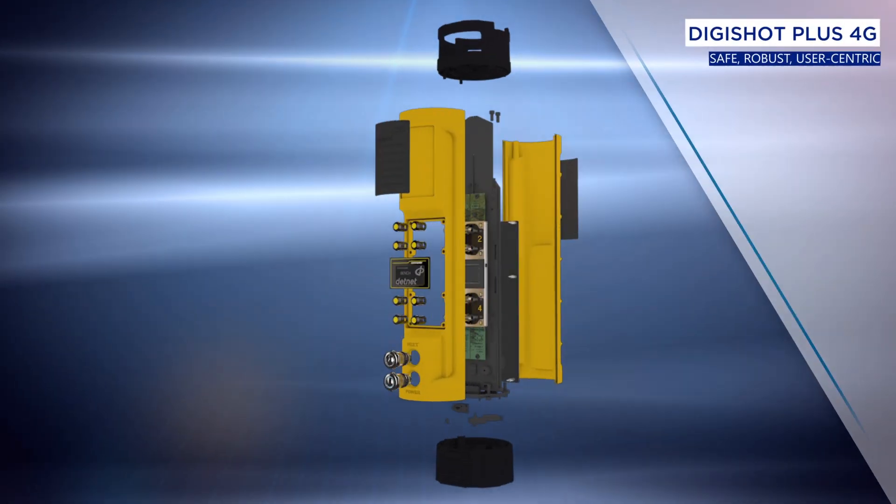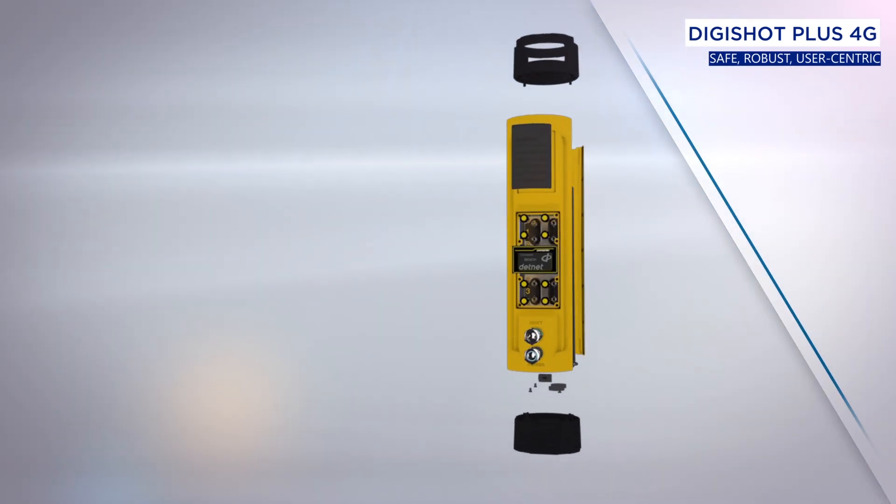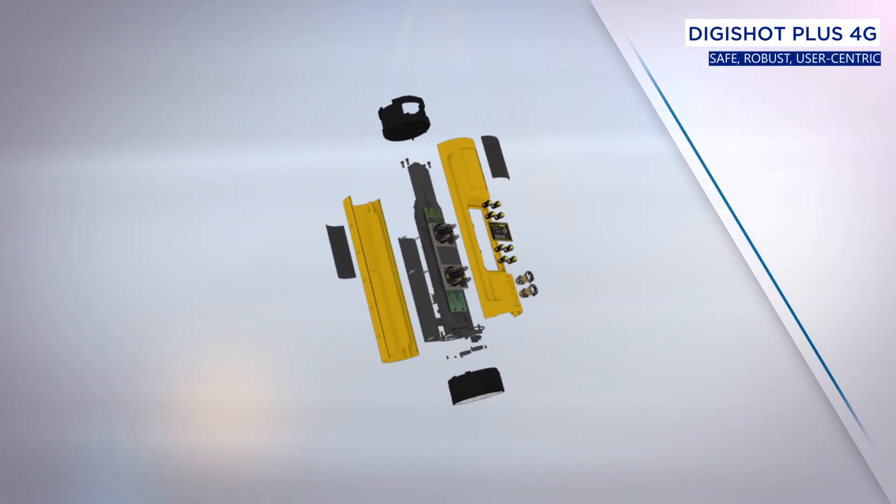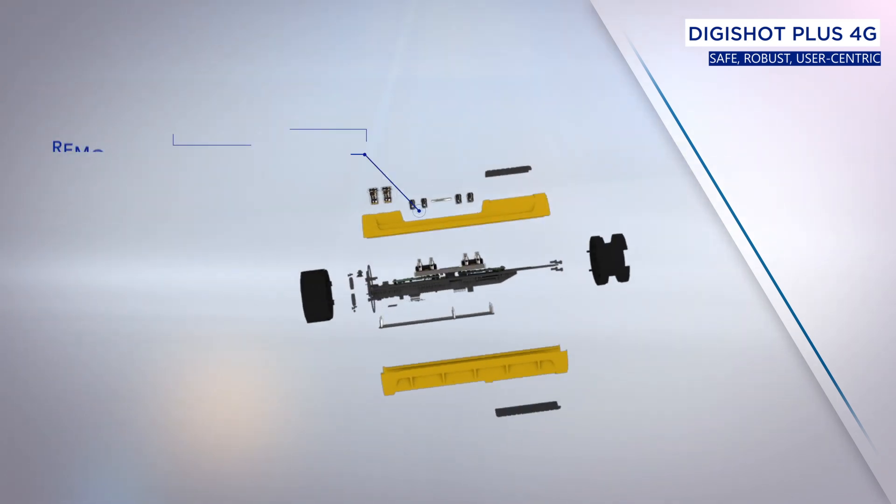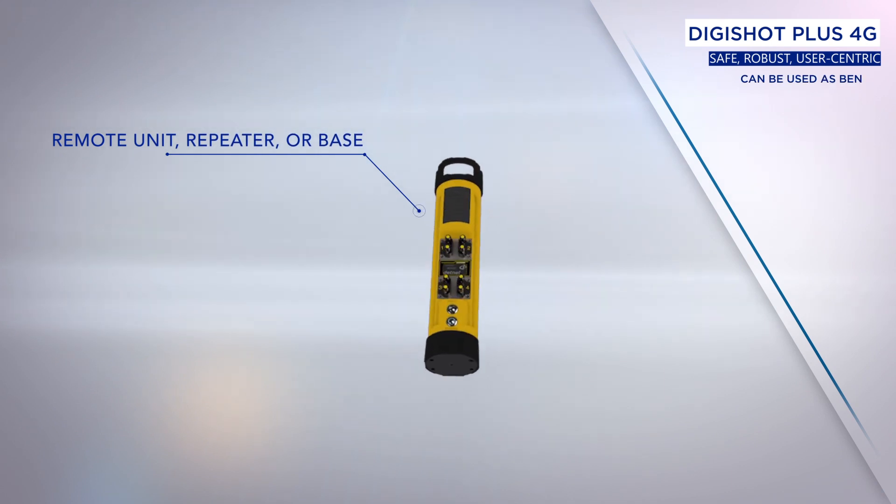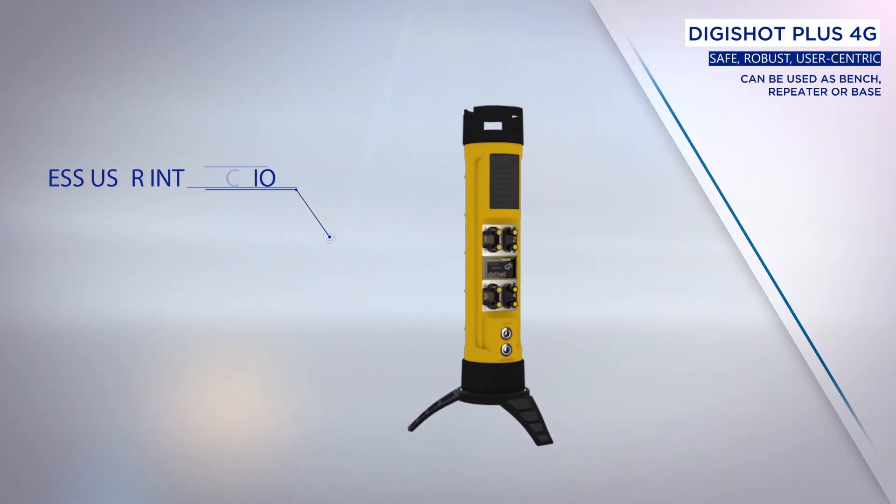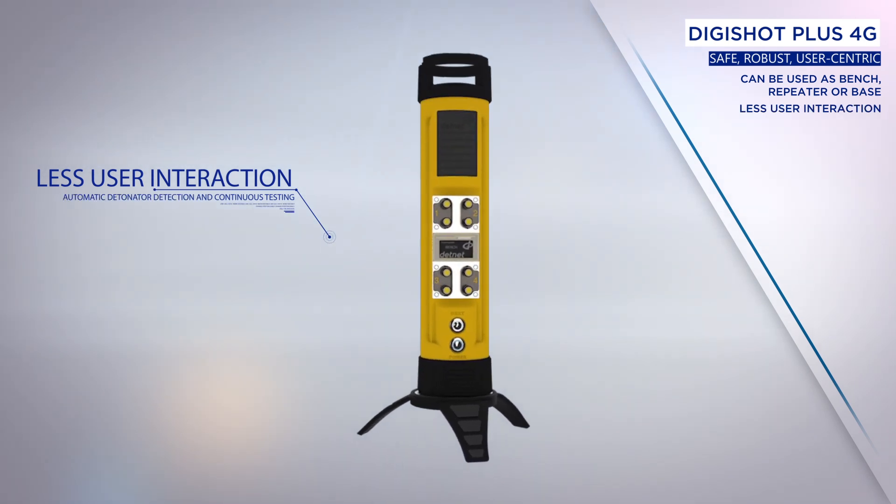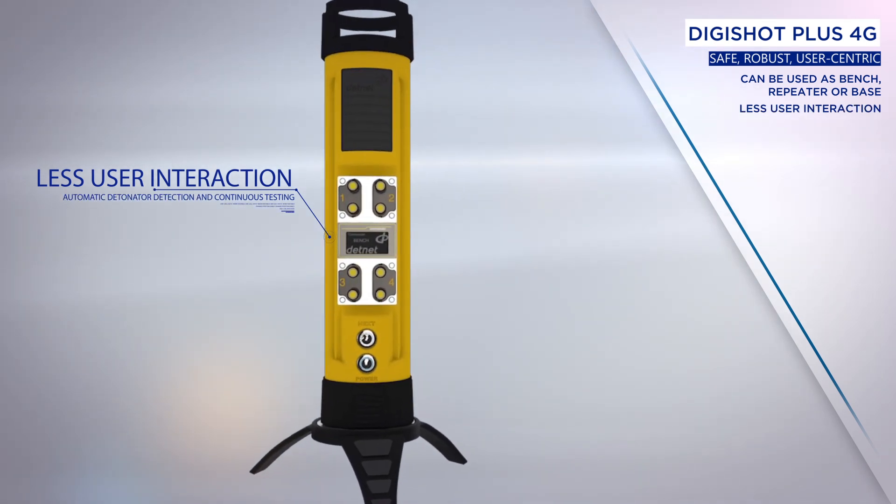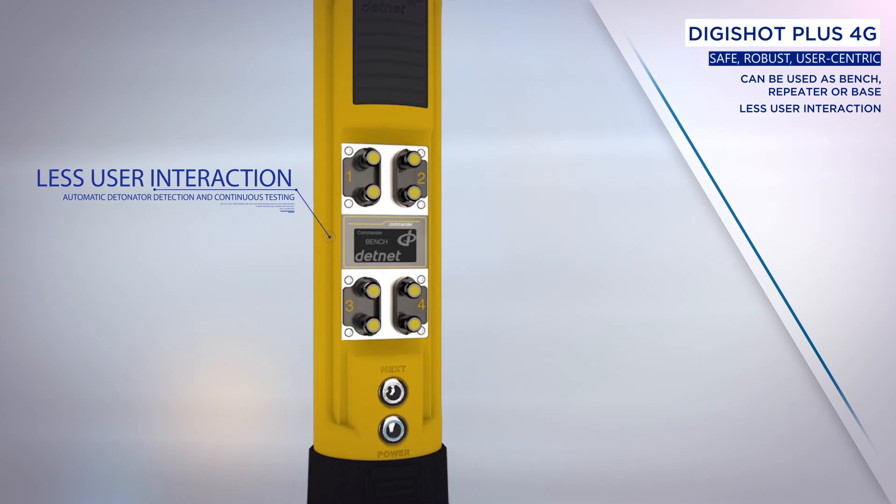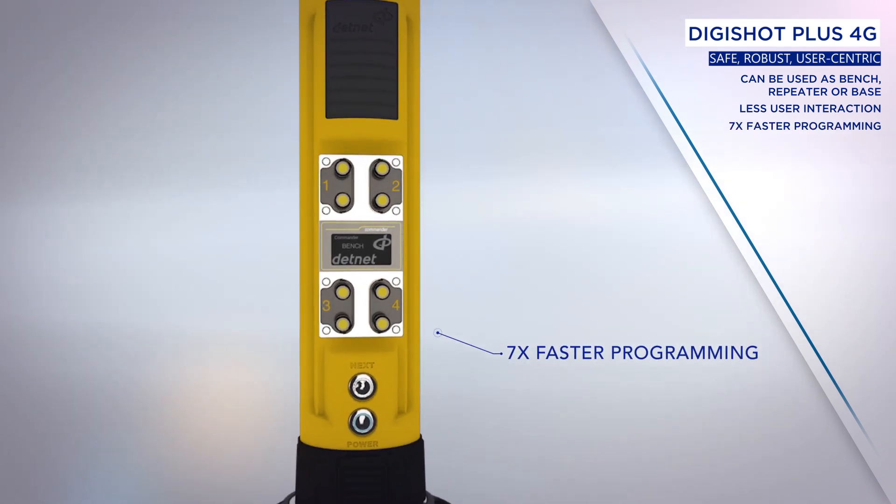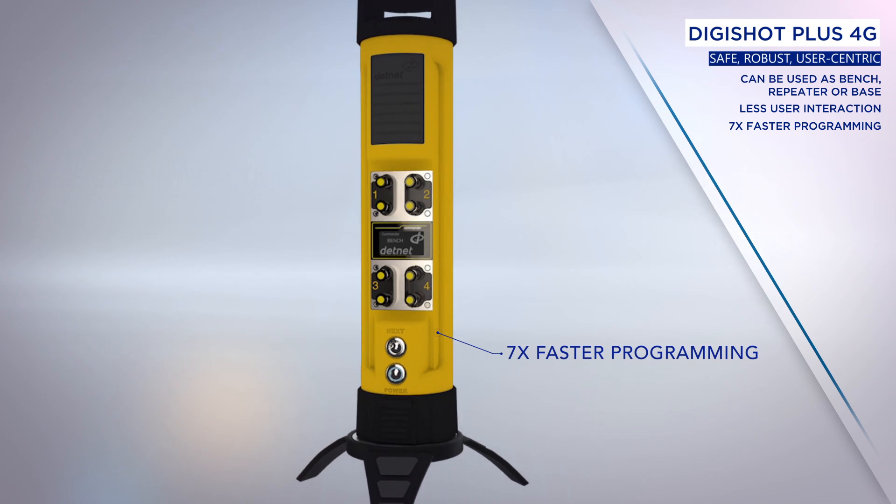The system is completed with the DigiShot Plus 4G commander, a safe, robust and user-centric blasting device. The multi-purpose DigiShot Plus 4G commander may be used as a remote unit at the bench, a repeater or a base commander. Automatic detonator detection and continuous testing means that less user effort is required. This, together with programming now seven times faster than existing systems, speeds up the blasting process.